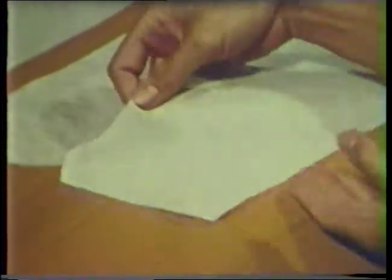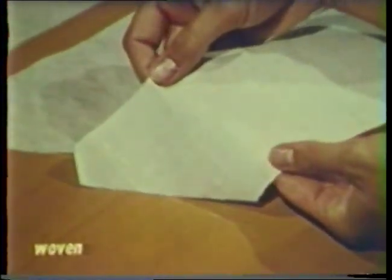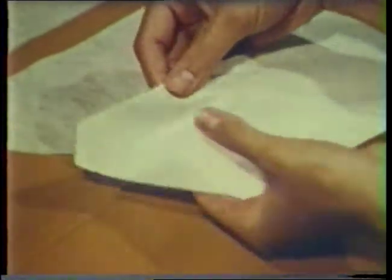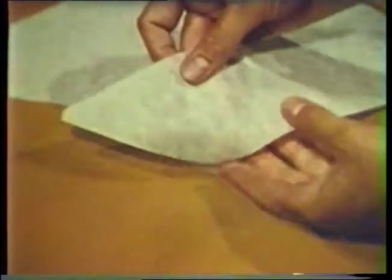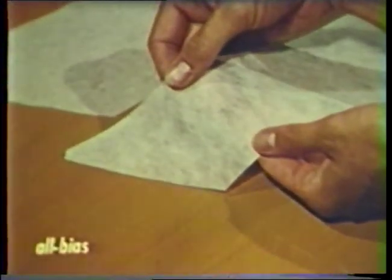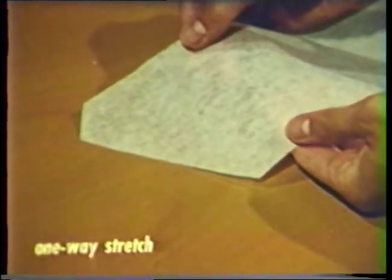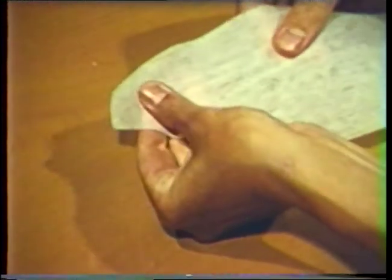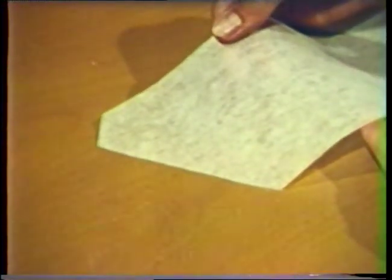There are basically three types of fusible interfacing. There is the woven interfacing — it is the most stable of the three and will have very little give in either the lengthwise or crosswise direction. Then there is the all-bias interfacing that has some give in all directions; this interfacing would add body to the garment area to which it is attached, but will not stabilize. The third type has stretch in one direction only, usually in the crosswise direction. There are both non-woven interfacings and knitted fusible interfacings that have one-way stretch.